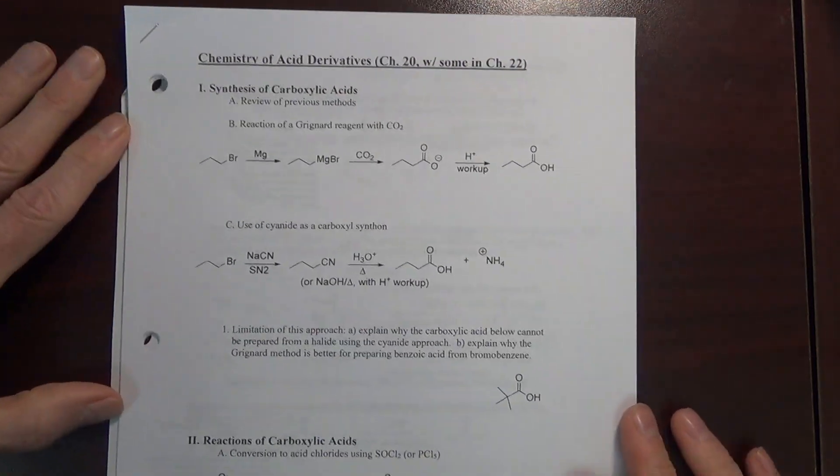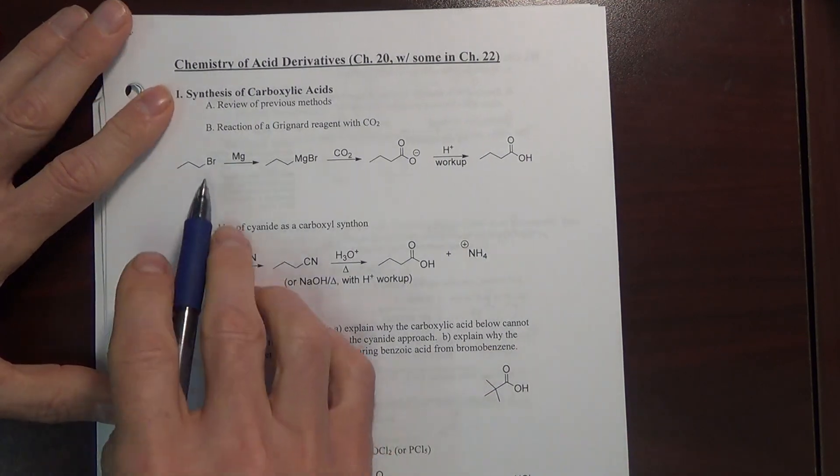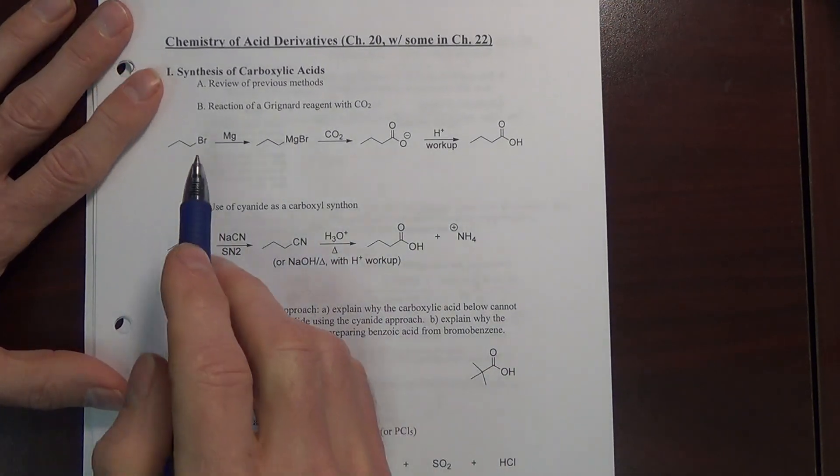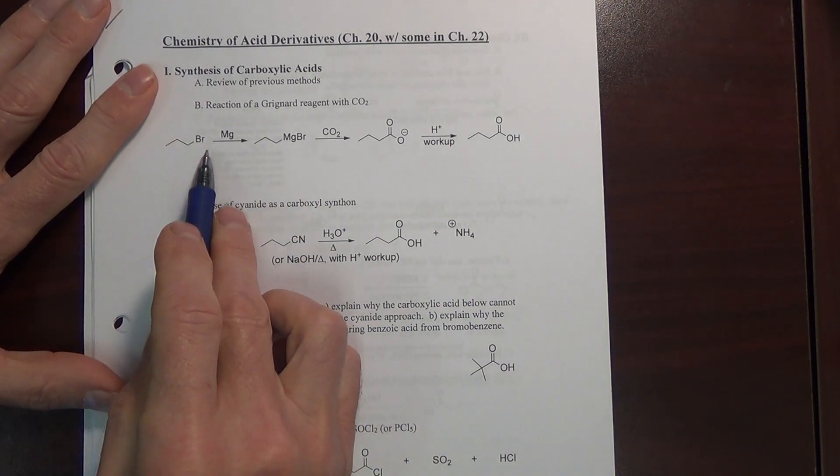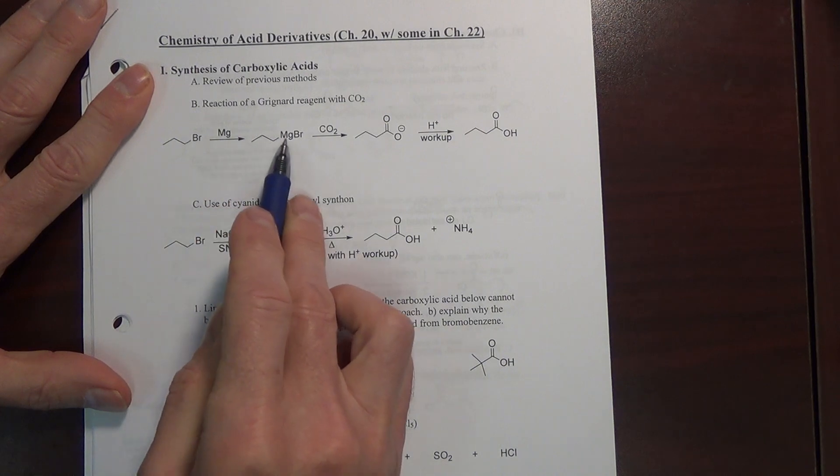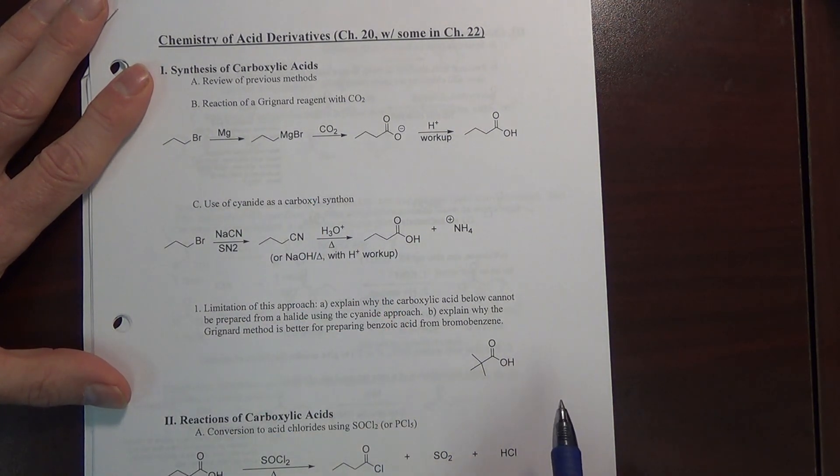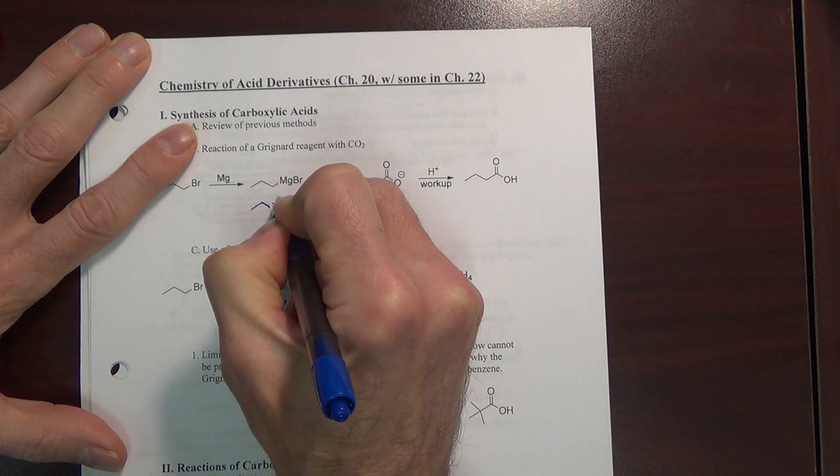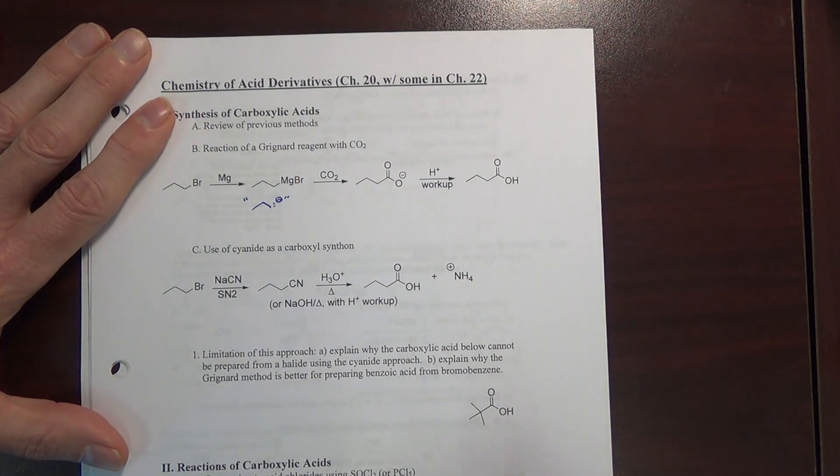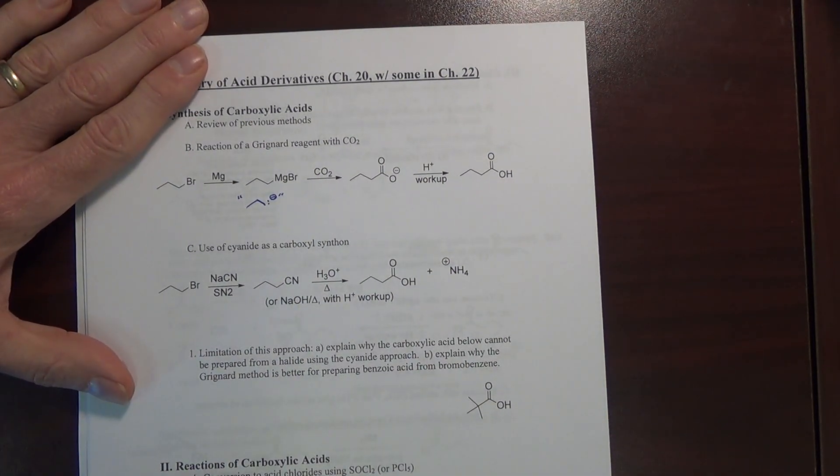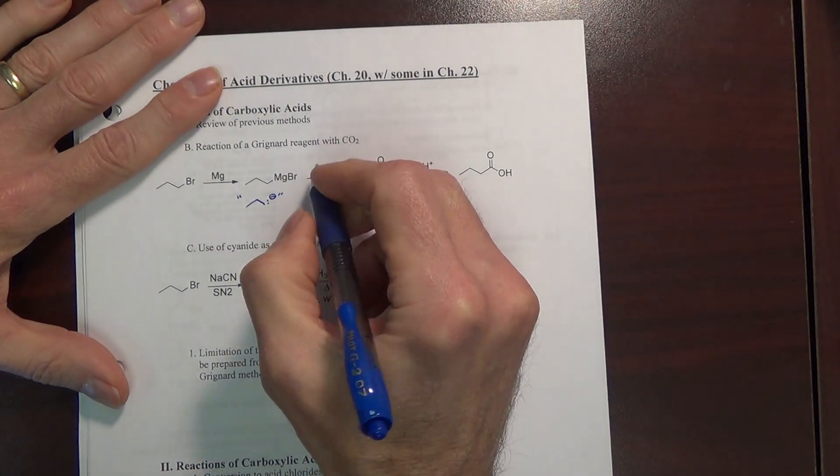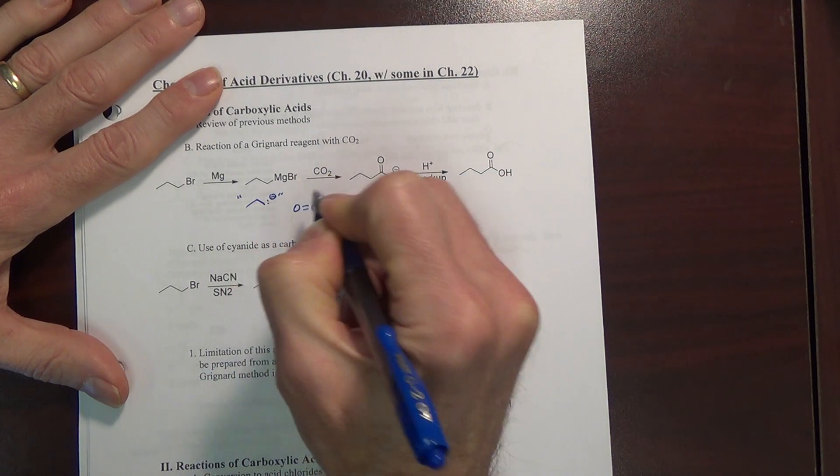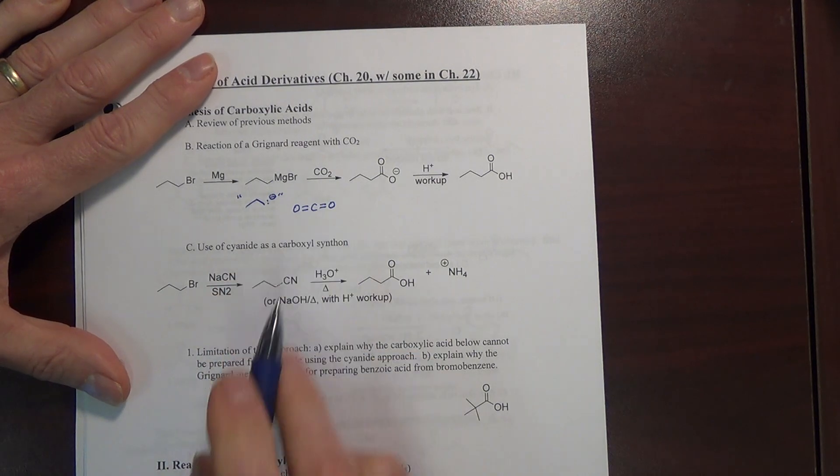Now, we can move to new methods for making carboxylic acids. And B is reaction of a Grignard reagent with CO2. If we take this alkyl halide reacted with magnesium metal, we will of course expect to get the Grignard. We've seen that before. And we know that the Grignard here is essentially, it reacts as if it's this carbanion. So nothing new there.